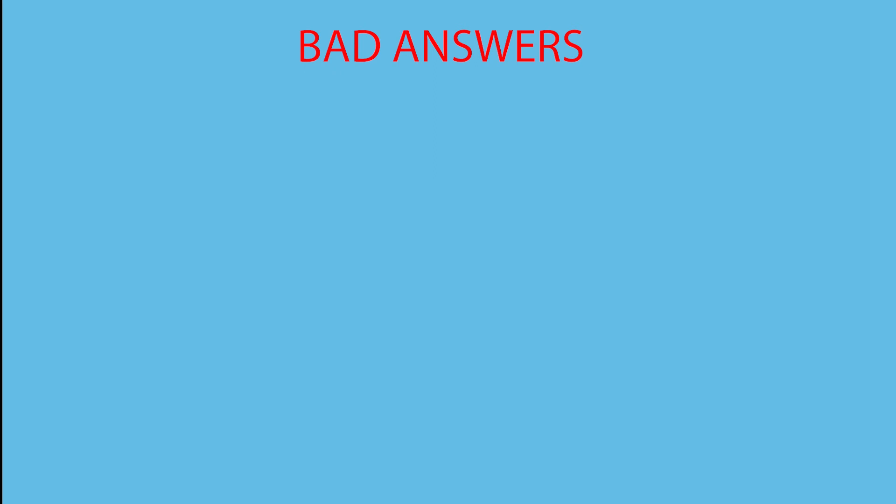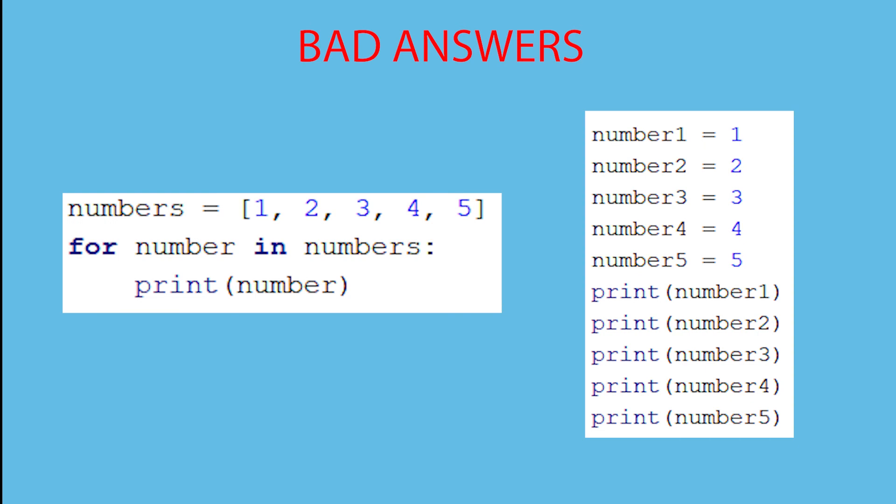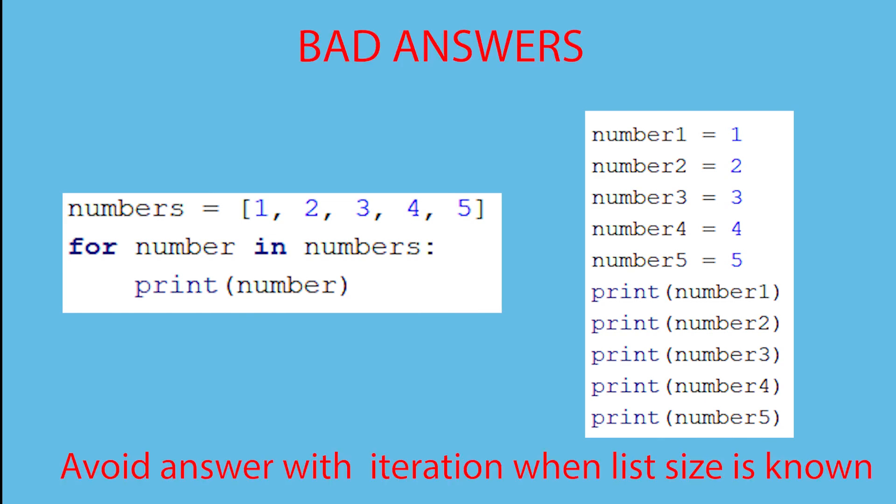The last bad example is looping through a list when the number of items doesn't change or when you know exactly how many items there are. Showing two codes side by side that do exactly the same thing, the one without the list is really not that much worse because I know exactly how many items are in the list. You need some sort of win from the list and you're not getting it here. On the other hand, if you don't know how many items are in the list, then you don't know how many variables you need — and in that case, that's a win.